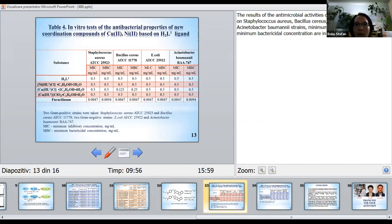The results of the antimicrobial activities of the synthesized compounds on Staphylococcus aureus, Bacillus cereus, Escherichia coli, Acinetobacter baumannii strains, minimum inhibitory concentration and minimum bactericidal concentration are in the region of 0.25 to 0.5 milligrams per milliliter.